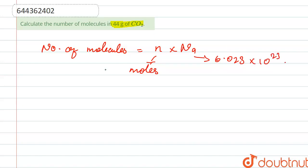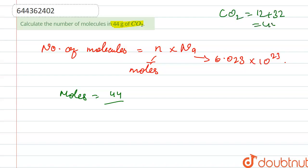We first calculate the number of moles. Moles = given weight / molecular weight = 44 / 44. We know that CO₂ has a molecular weight of 12 + 32, which equals 44. So the number of moles is 1.